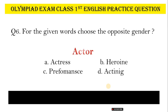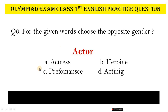Question No. 6. For the given word, choose the opposite gender. The word is Actress. Options: A, Heroine; B, Performance; C, Actor; D, Acting. Actors — the opposite gender is Actress. Correct answer is Option A.